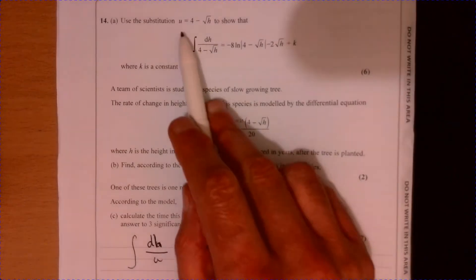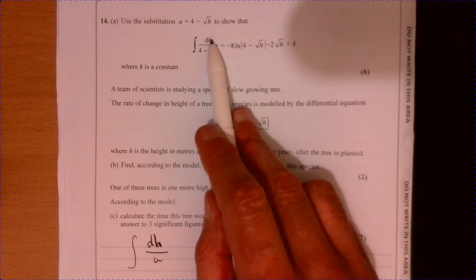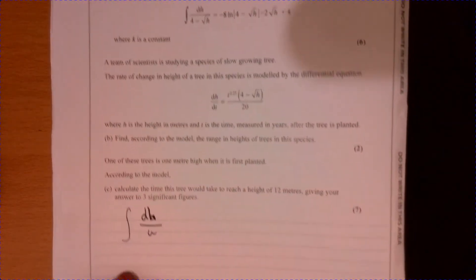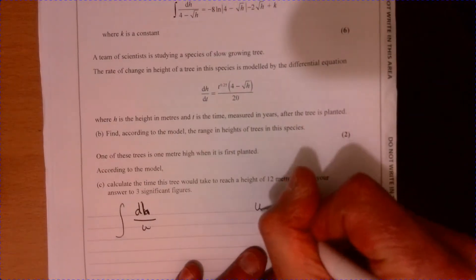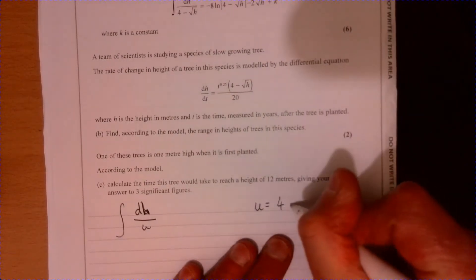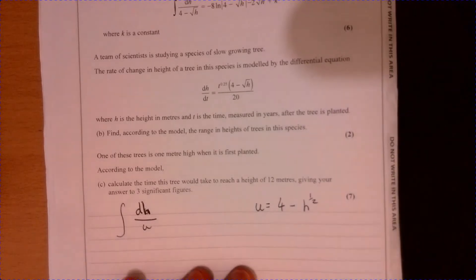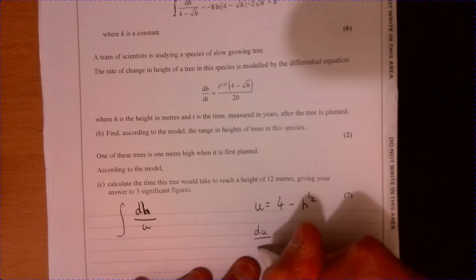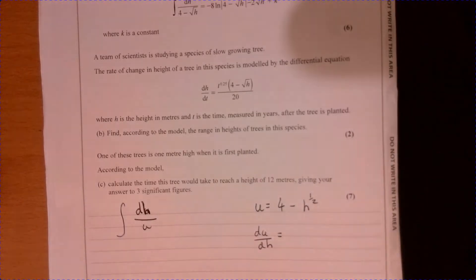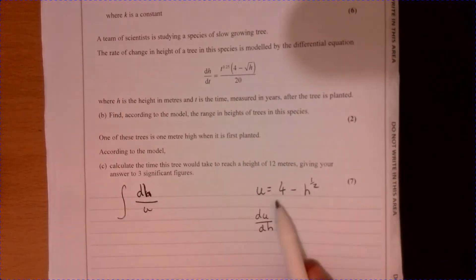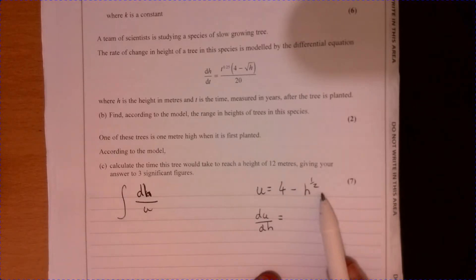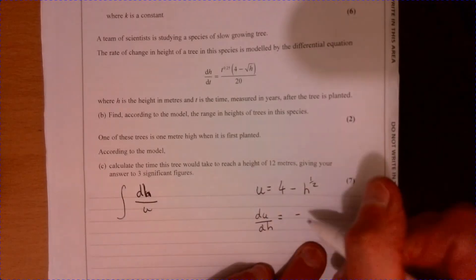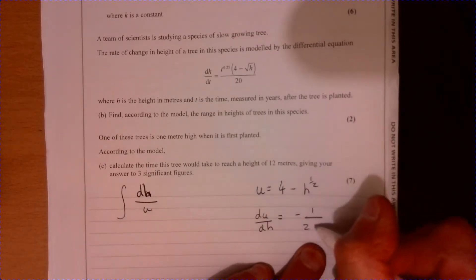Question 14 so we're told to use this substitution so we just swap this in. Let's see what happens. We know that u equals 4 minus h to the half so therefore we can write down du over dh. We can just differentiate this part here so if we differentiate that that's just going to give us minus one over two.